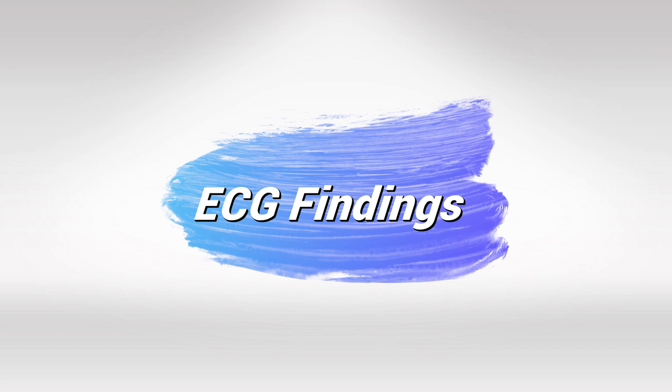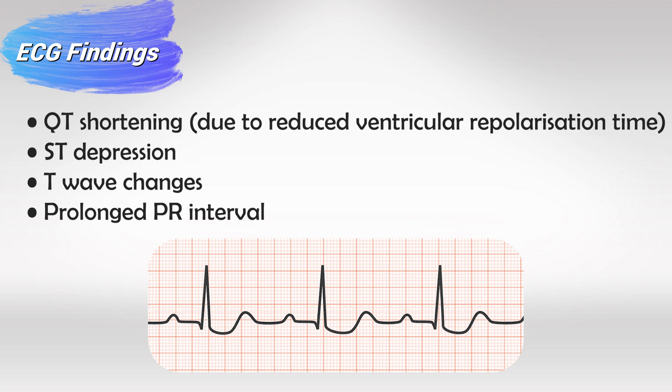In the ECG, digoxin toxicity manifests in QT shortening. There will also be ST depression, T wave changes, either peaking or inversion, and prolongation of the PR interval.